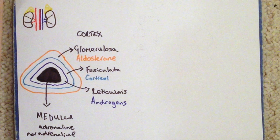To remember the different hormones, I like to think that the hormones get sweeter as you go down the layers. So aldosterone is a mineralocorticoid. We then move on to cortisol, which is involved in glucose metabolism - so that's a bit sweeter. And then lastly we have the androgens or the sex hormones, which are the sweetest of all three.